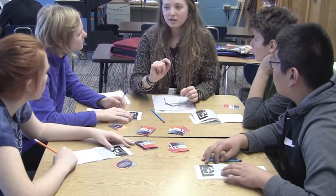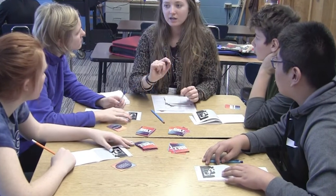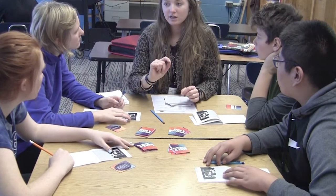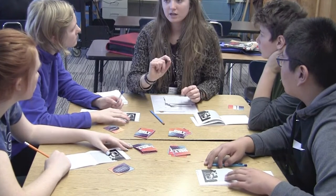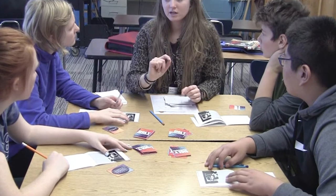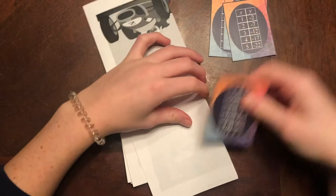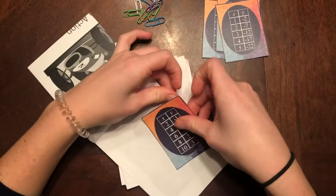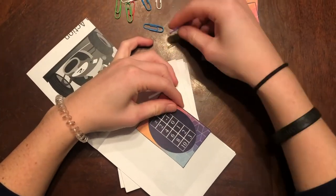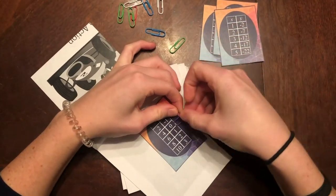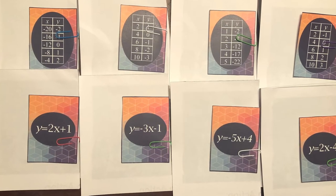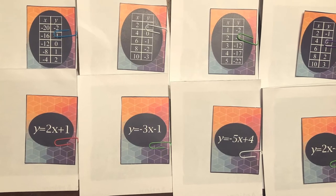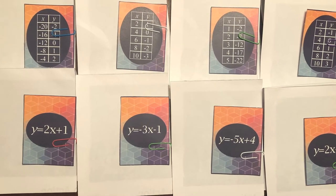This game is played in four member teams. Provide each team at least one linear telestrations representation cycle card. Paperclip one table card inside the first page of each recording booklet for the first round, and a different type of representation card in each booklet for the second round.